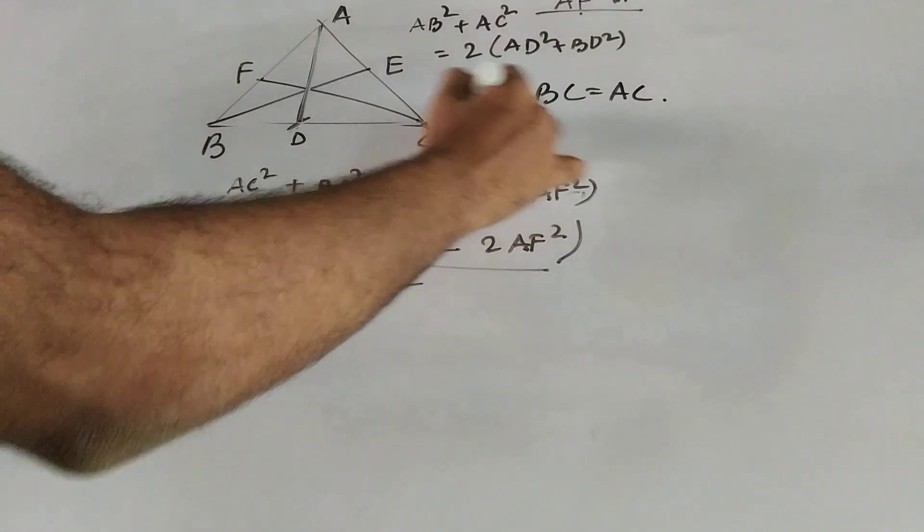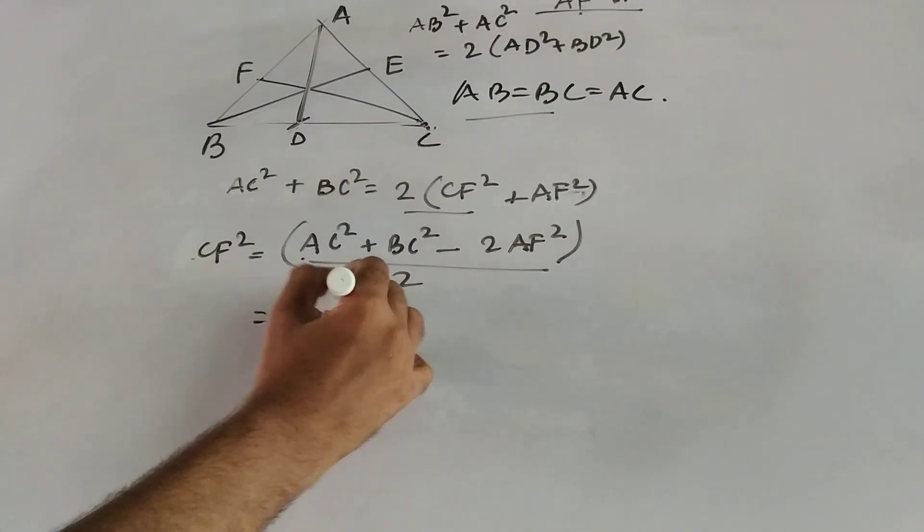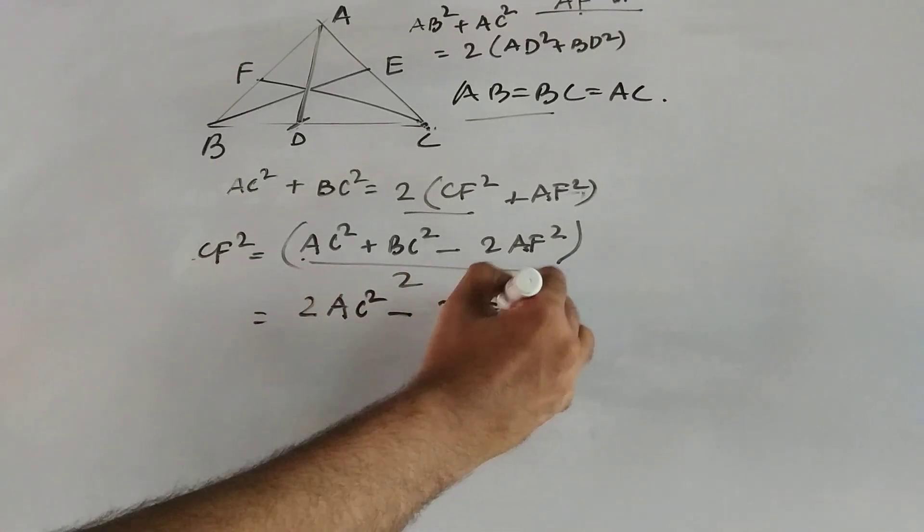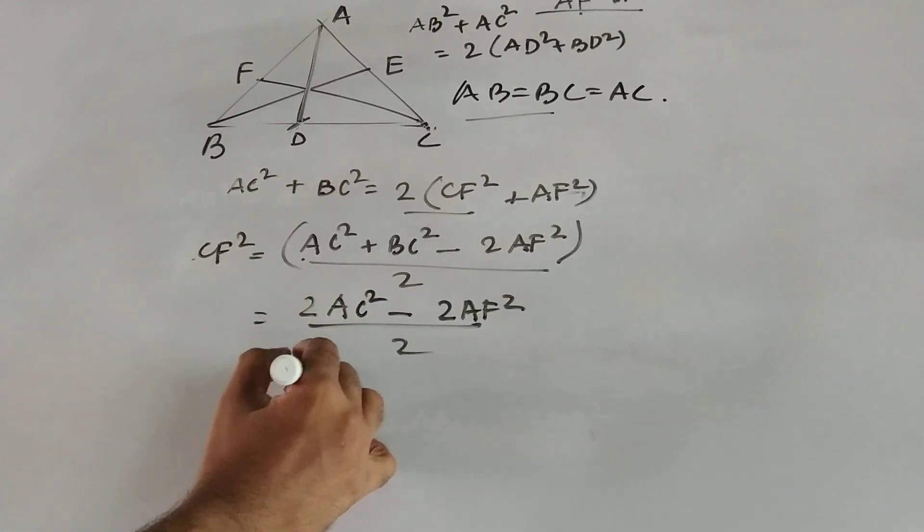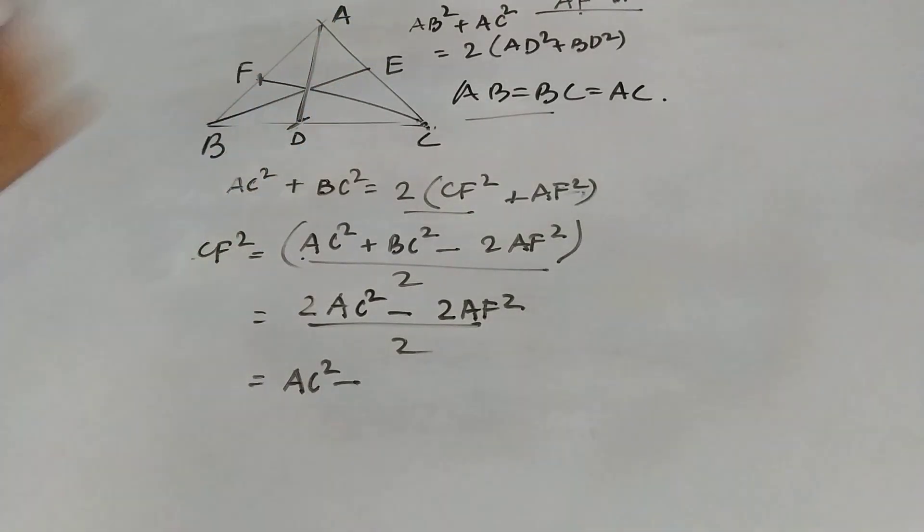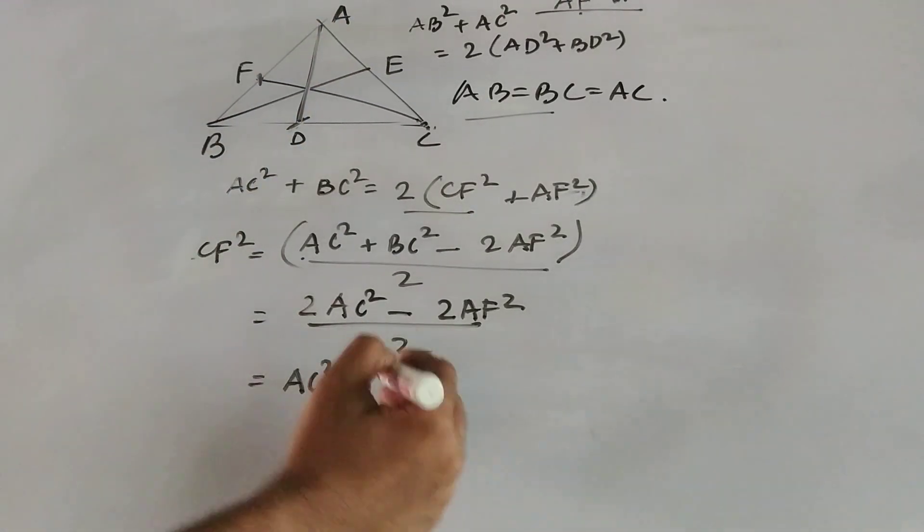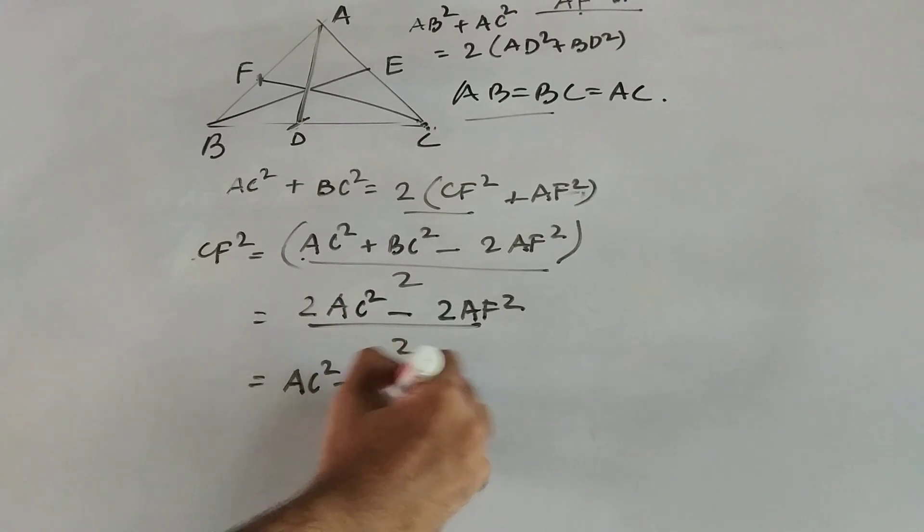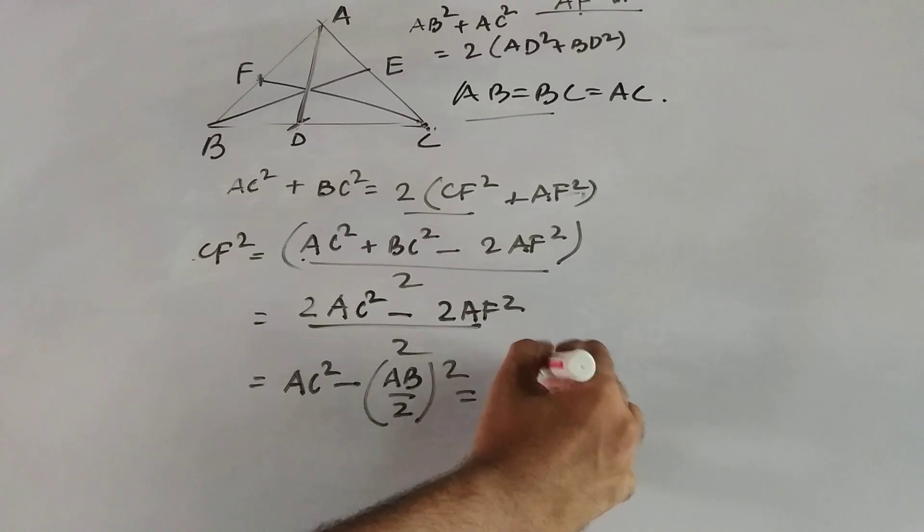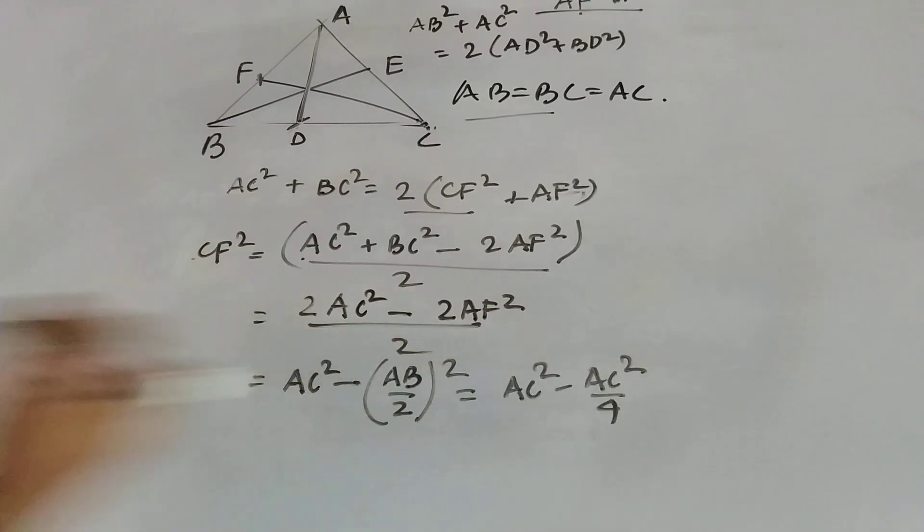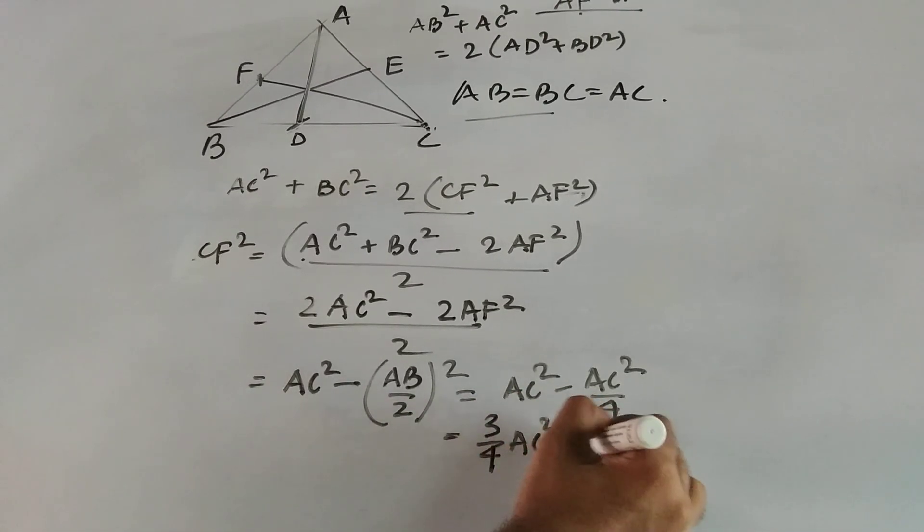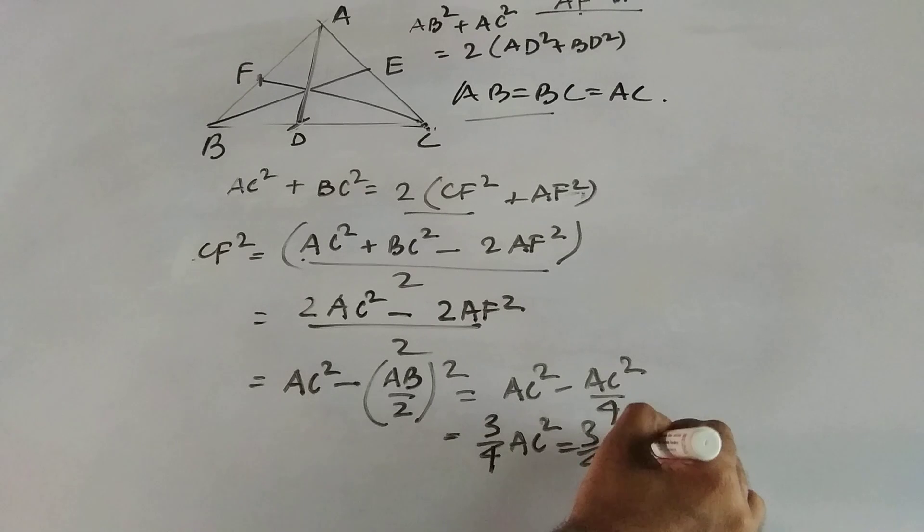Now AC equal to BC for an equilateral triangle. So it is 2 into AC square minus 2 AF square whole divided by 2, that is AC square minus AF square. What is AF? AF is the midpoint of the line AB. So this is AB by 2 whole square and AB equal to BC equal to AC, that means AC square minus AC square by 4, which is simply 3 by 4 AC square or 3 by 4 AB square as well, since all the sides are equal.